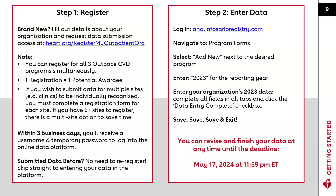There are two steps to submit data for award achievement. The first step is to register — this lets us create a profile and user login for you in our online data platform. If your organization is new, go to heart.org/register-my-outpatient-org to register. If you've submitted data before, you don't need to re-register. When registering, we'll ask basic demographic questions and what initiatives you wish to register for — you can register for all three at the same time. If you want to add additional programs later, you'll need to complete the form again, so selecting all three upfront saves time.